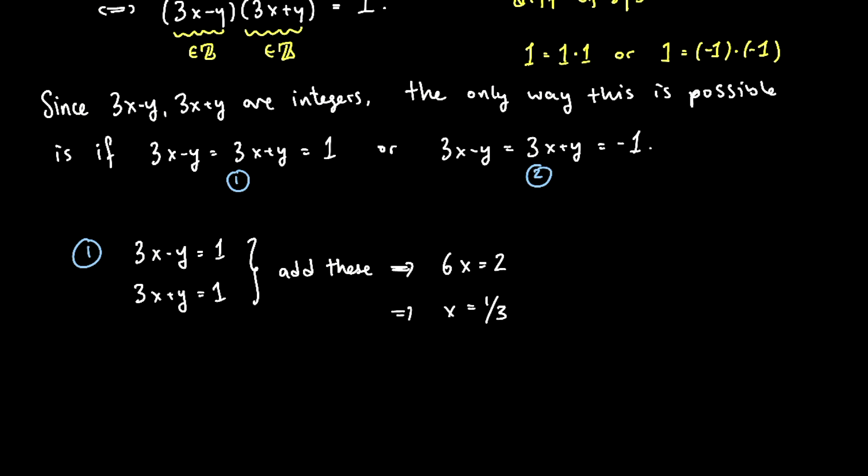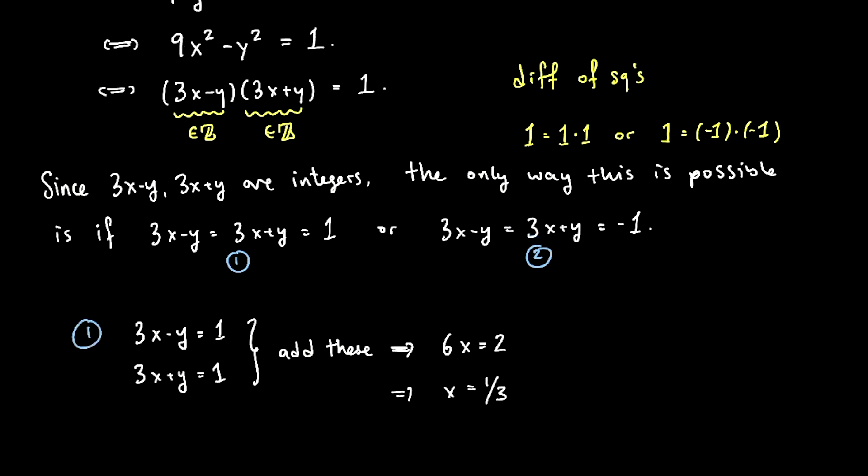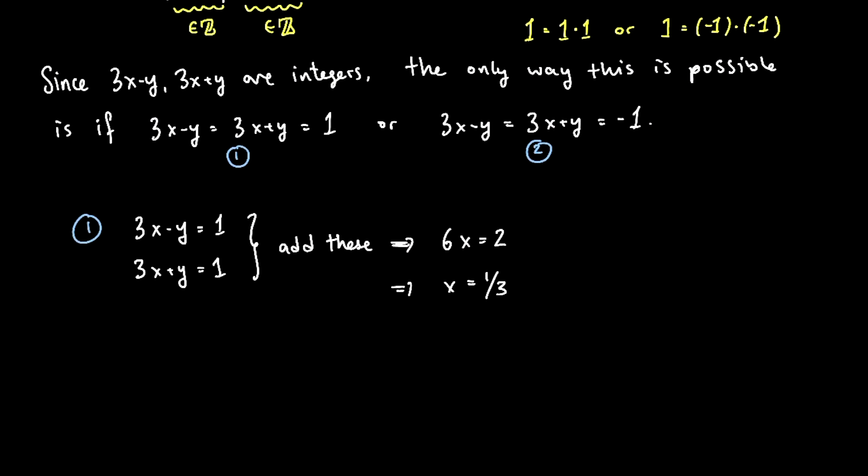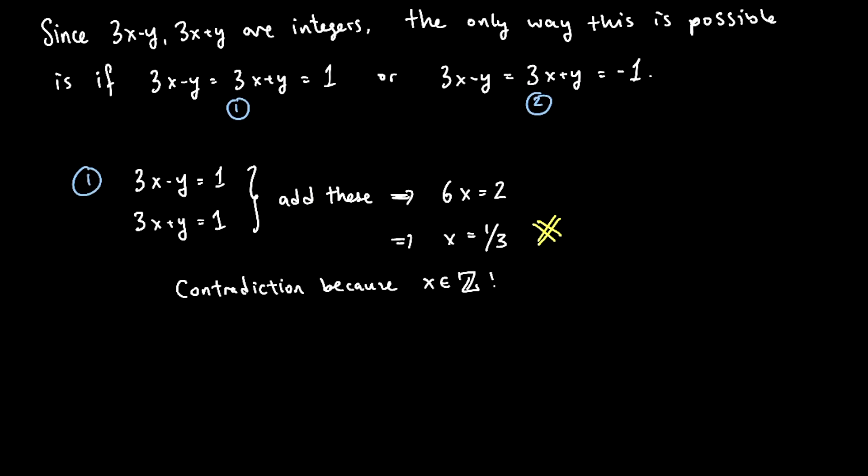And you look at this and say, why is this a contradiction? Well, x was given to be part of a pair of integers. x is an integer itself. So if x is an integer, I just said x equals 1 over 3. That's a contradiction, right? That's impossible. 1 over 3 is not an integer. So contradiction because x is supposed to be an integer. So in this case I got a contradiction.